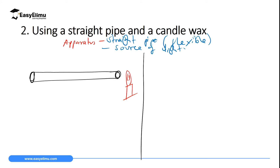You then observe from the other end of the pipe. When the pipe is straight, you will be able to see the flame on the other end. This means light from the flame travels inside the pipe in a straight line into your eye. You will even see the color of the flame as a yellow flame.